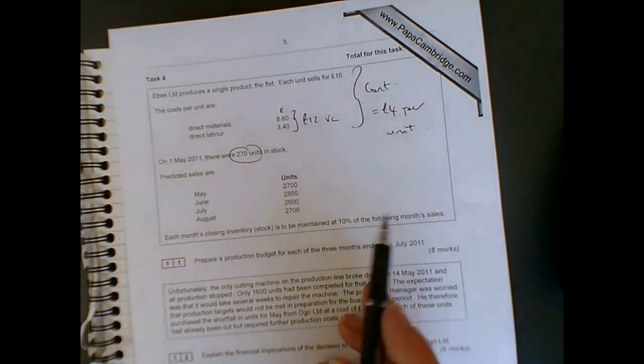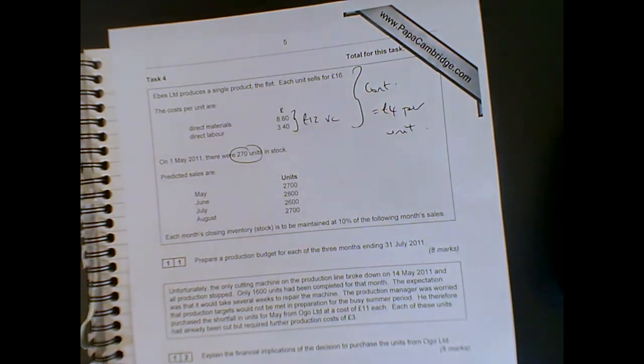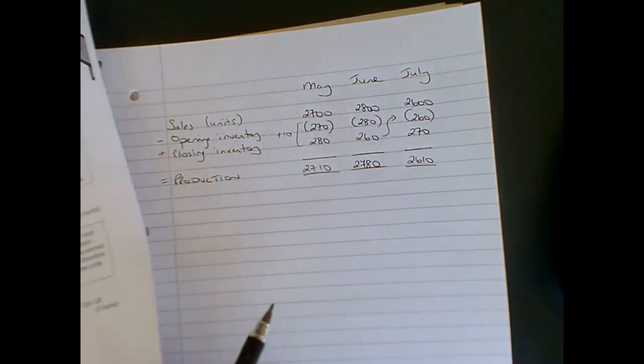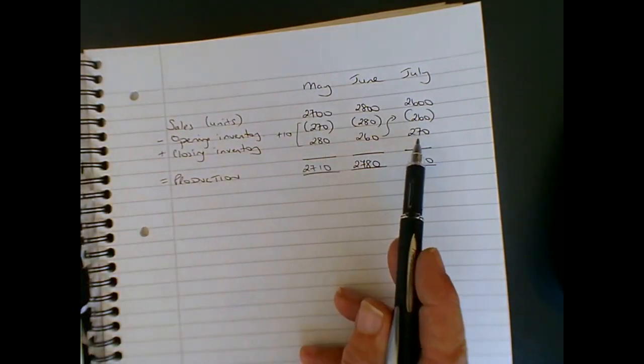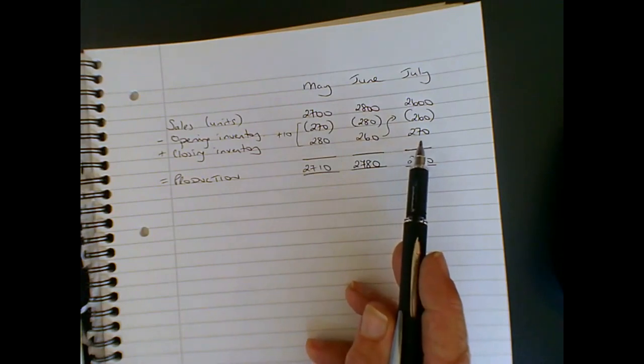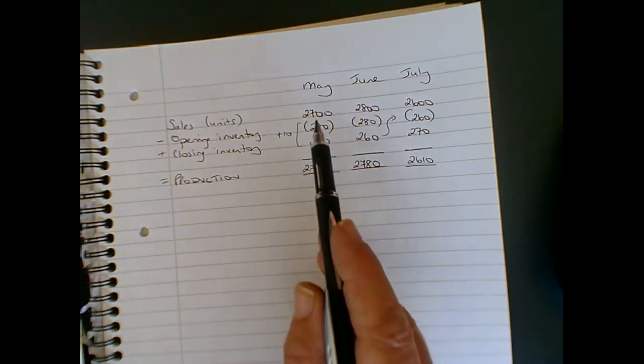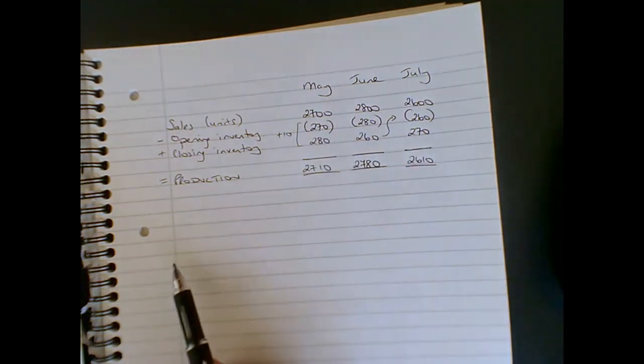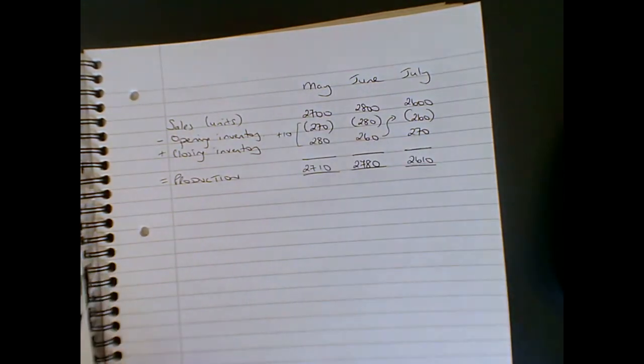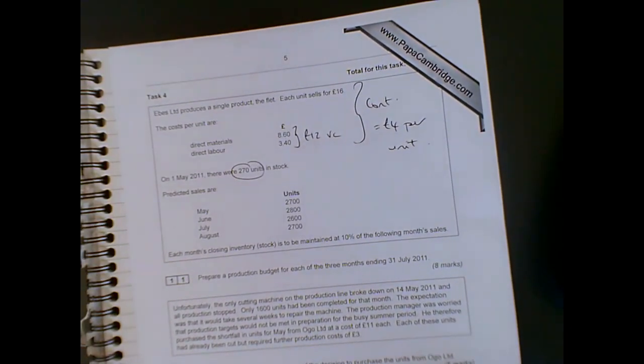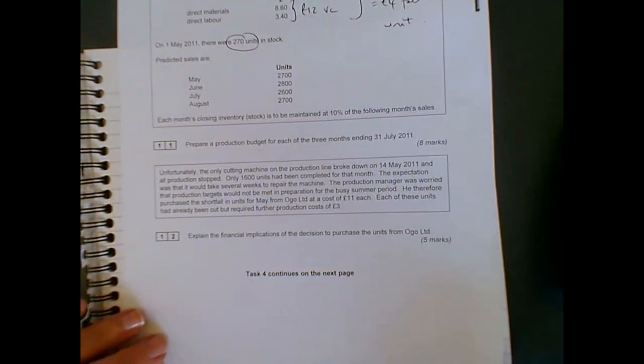So this was eight marks back in the day. I don't think we'd be getting eight marks for doing that these days, but just gives you an idea. Just remember, the layout is always the same as I've done here. Just watch out for this closing inventory, because if they told you that the maximum storage was, for example, 260 units, then we would need to make sure that the closing inventory is never higher than 260 units. So that's part one of the question done.